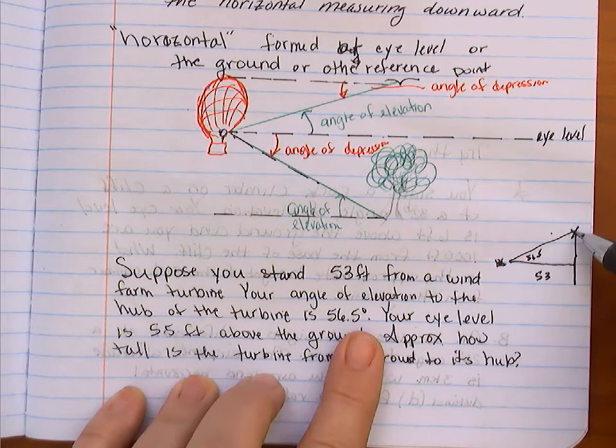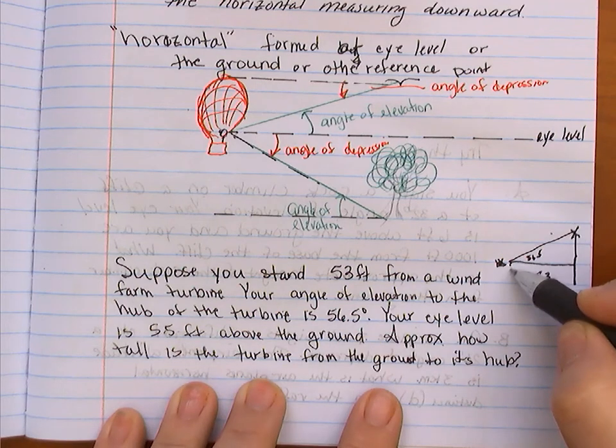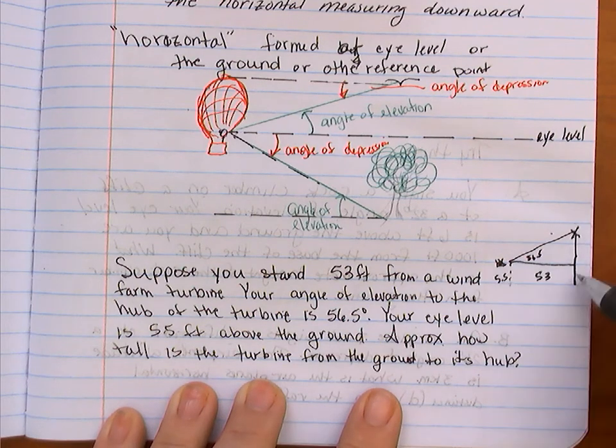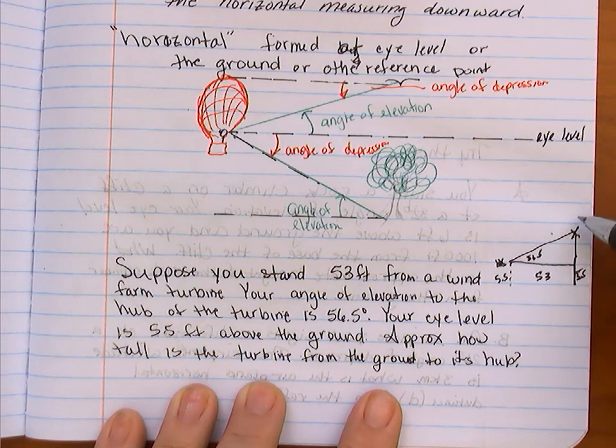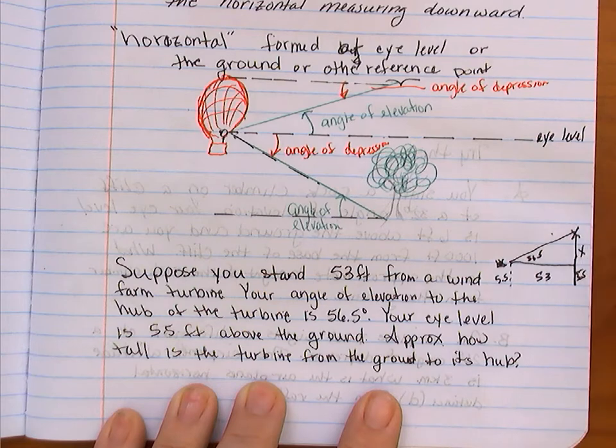And then this angle right here is 56.5 degrees because it is an angle of elevation right here, as stated. So I'm looking up towards the turbine. I am also 5.5 feet from the ground. So that's going to be relevant because I'm looking for the length of the whole turbine, not just from here up. So I'm going to start by calling this x.